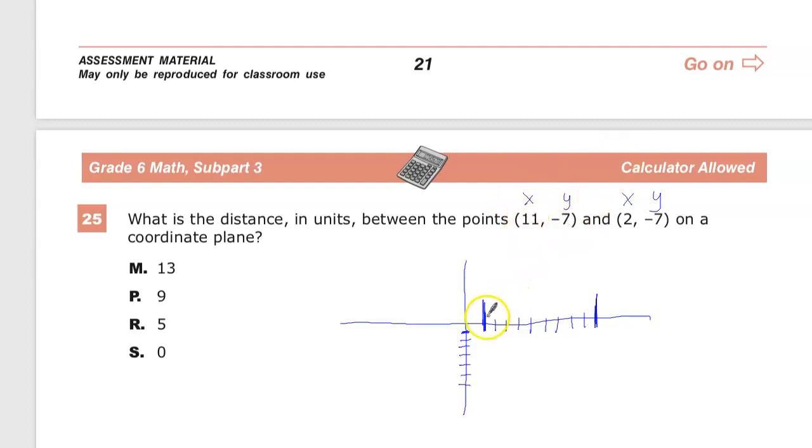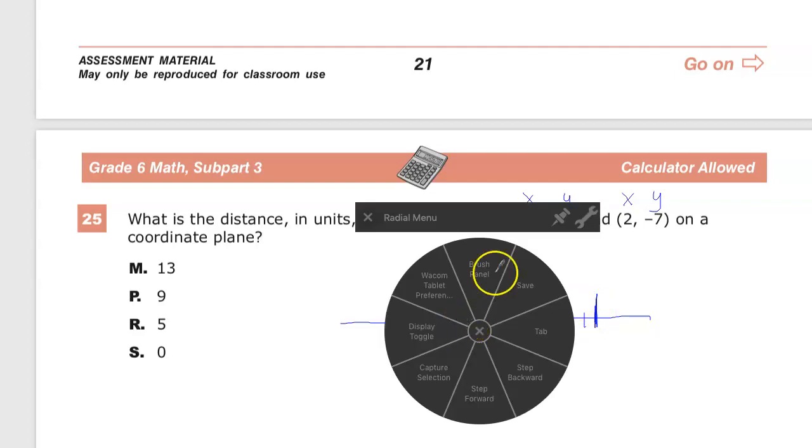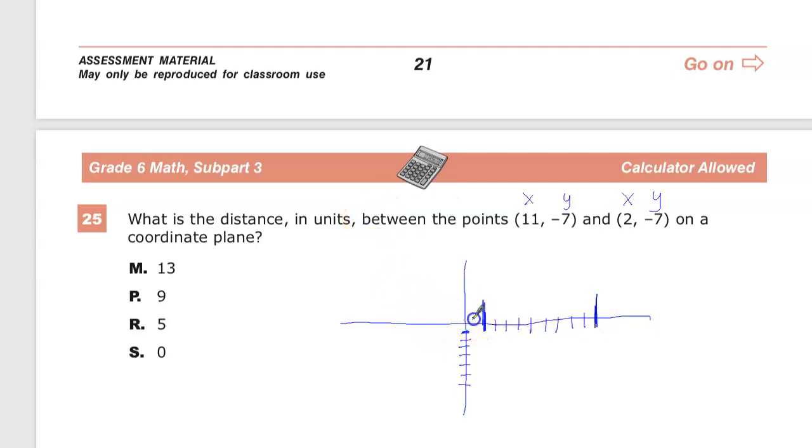So this one's on the x-axis. I need to go out to 11. 1, 2, 3, 4, 5, 6, 7, 8, 9, 10. And my radio menu's out. 1, 2, 3, 4, 5, 6, 7, 8, 9, 10, 11. So 11 and then down to negative 7, which I went ahead and produced that. So right there.